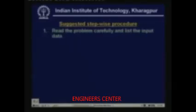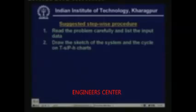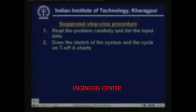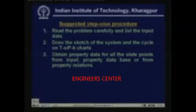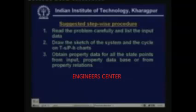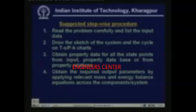The first step is obviously you have to read the problem carefully and list the input data. The second important step is you draw the sketch of the system and the cycle on T-S or P-H charts and label all the state points. Step 3 is to obtain property data for all the state points either from the input, from property database, or from property relations. Step 4 is to obtain the required output parameters by applying relevant mass and energy balance equations across the components or system.